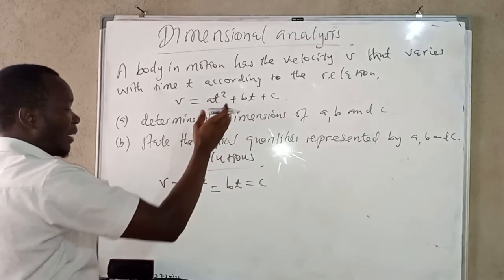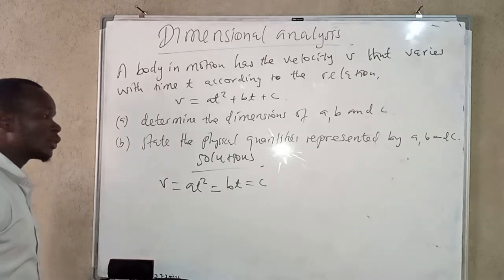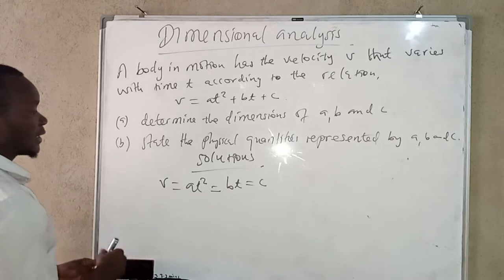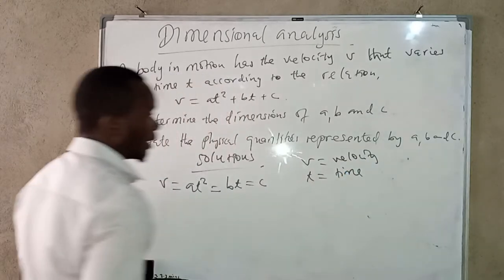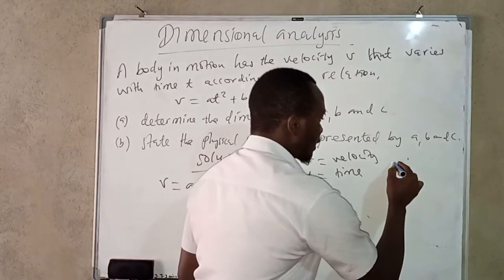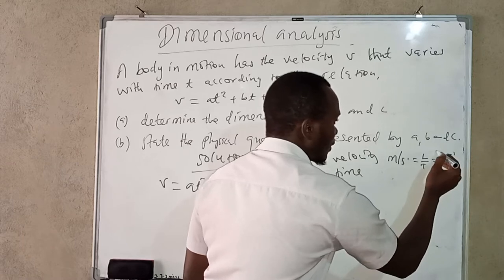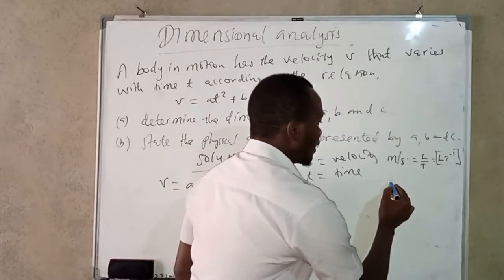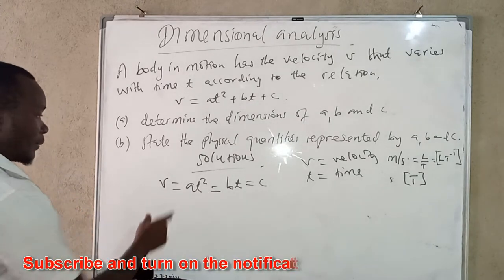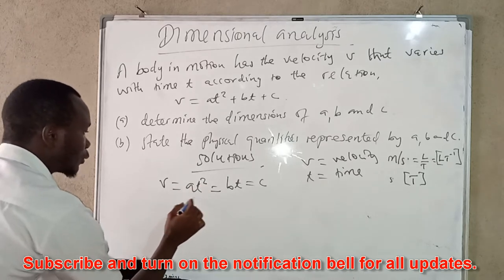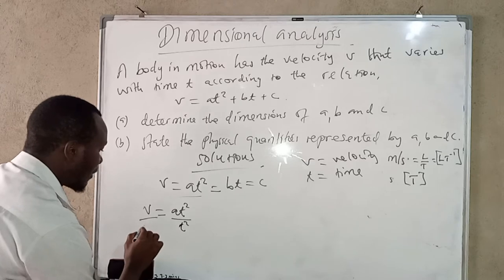v is velocity, and t is time. The units of velocity are meters per second, so in terms of dimensions, velocity is LT⁻¹. Time t has dimensions T. So the equation tells us that LT⁻¹ equals a·T², and to find a we divide both sides by T², giving a = v / t².